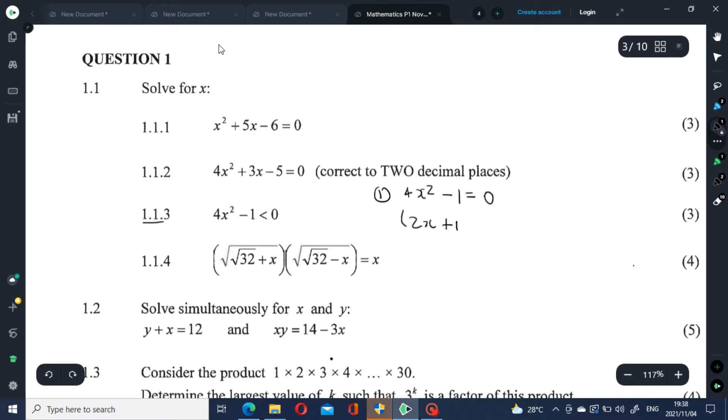And by inspection, it is quite evident that 2x plus 1 and 2x minus 1 are the factors. You can use distributive law to verify that.